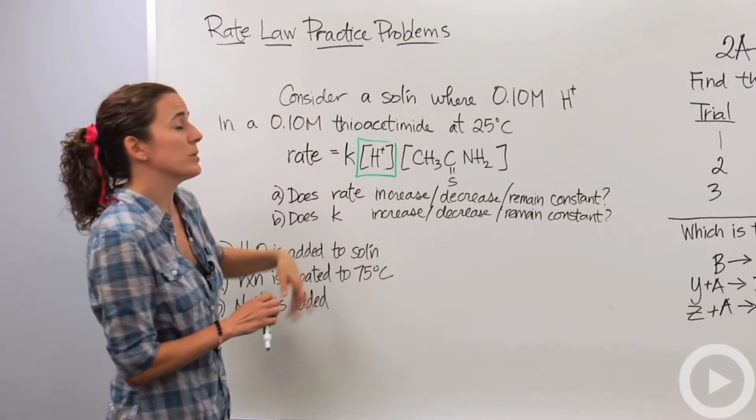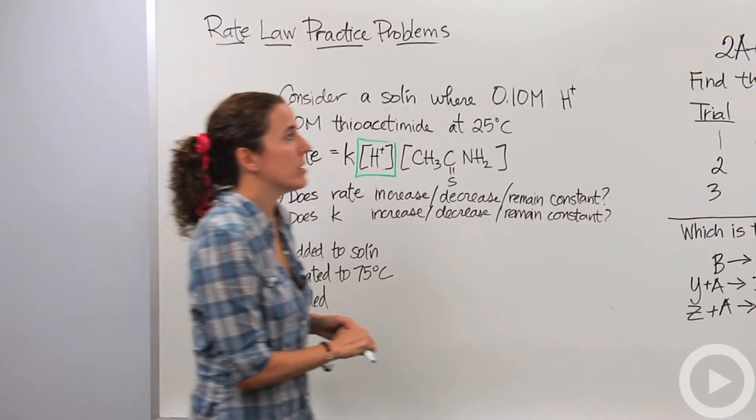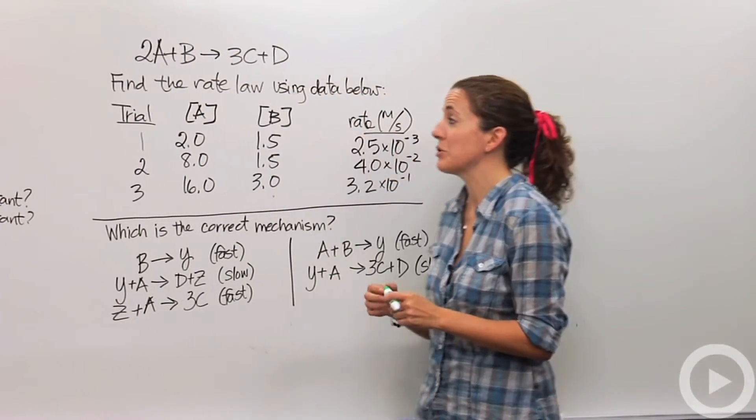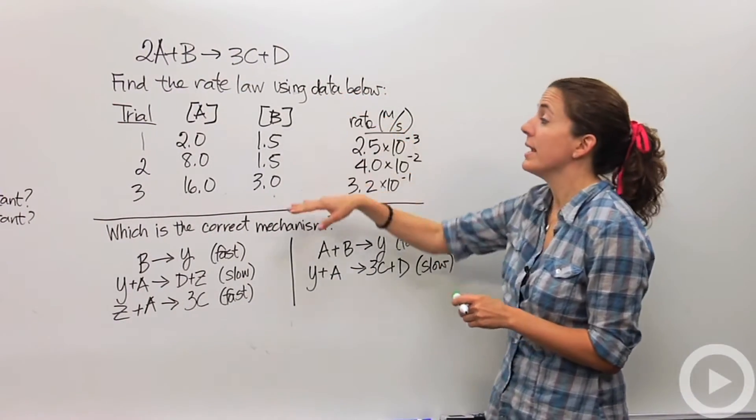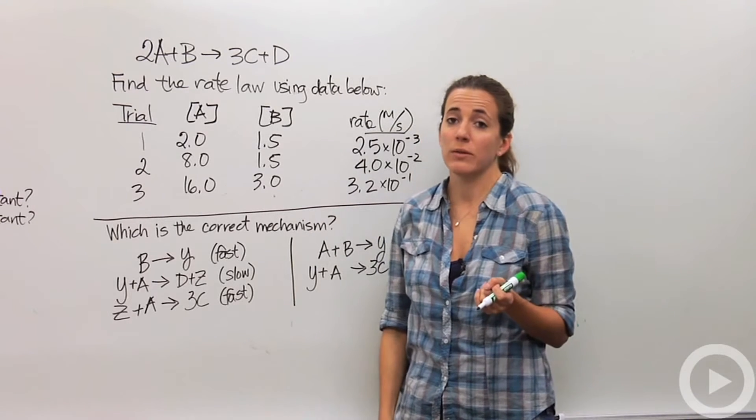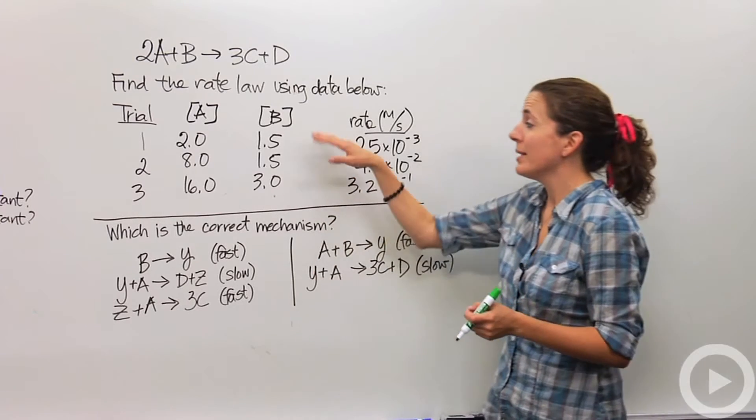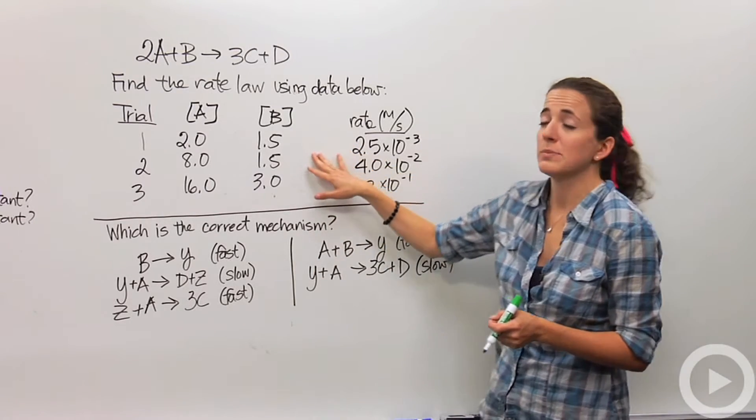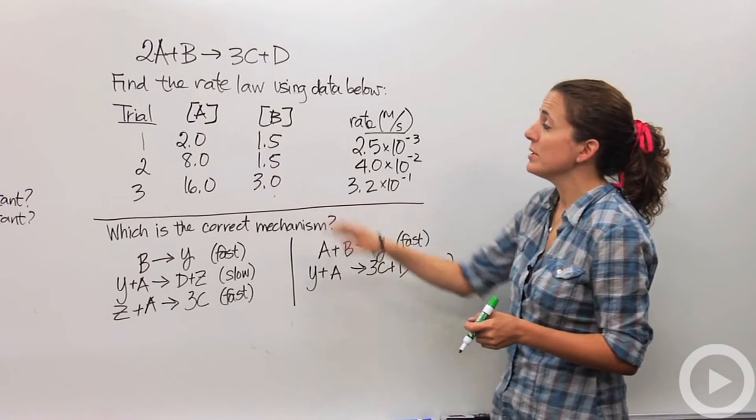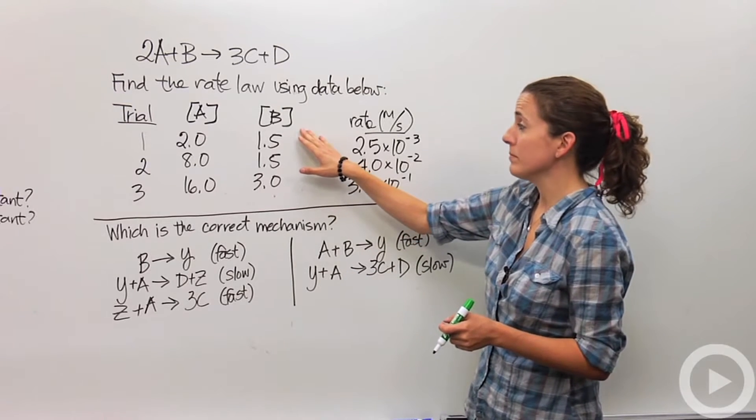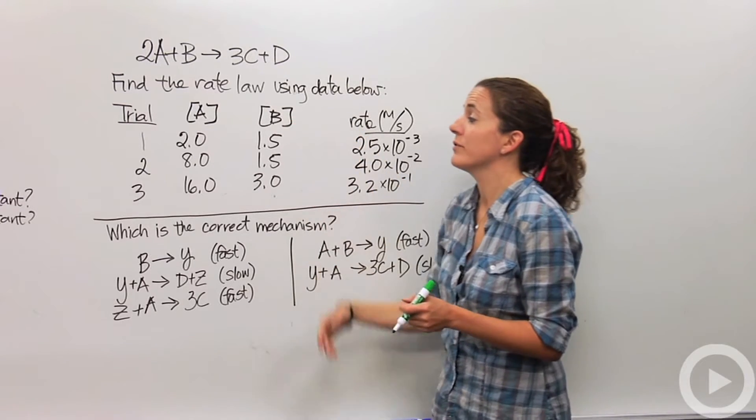That's one type of problem that you might see. Another type of problem that you might see are dealing with finding the actual rate law using data. We've talked about that in the rate law videos, but let's talk about how this problem might be a slight bit different. You're supposed to figure out the rate when comparing two different trials.